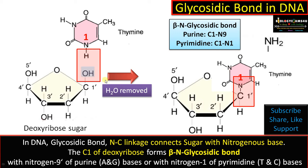Let me summarize. In DNA, the glycosidic bond or N-C linkage connects the deoxyribose sugar with the nitrogenous base. The C1 of the deoxyribose sugar forms a beta-N glycosidic bond with N9 of purine bases, or with N1 of pyrimidine bases.